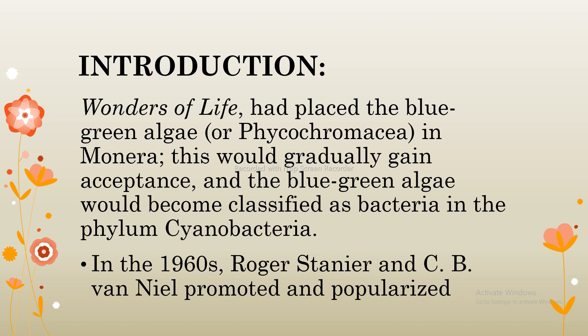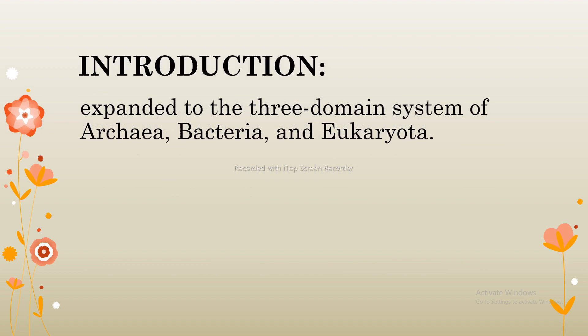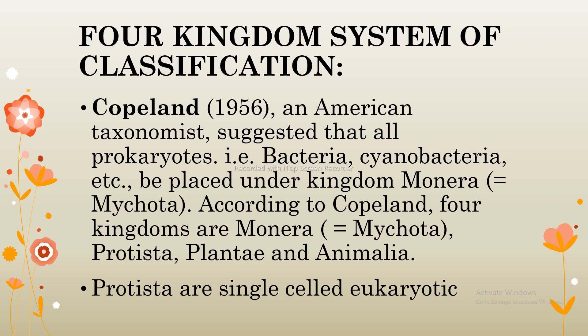In the 1960s, Roger Stanier and C.B. van Niel promoted and popularized Edward Chatton's earlier work, particularly in their 1962 paper 'The Concept of a Bacterium'. This created for the first time a rank above kingdom — a super kingdom or empire — with a two-empire system of Prokaryotes and Eukaryotes. The two-empire system would later be expanded to the three-domain system of Archaea, Bacteria, and Eukaryota.